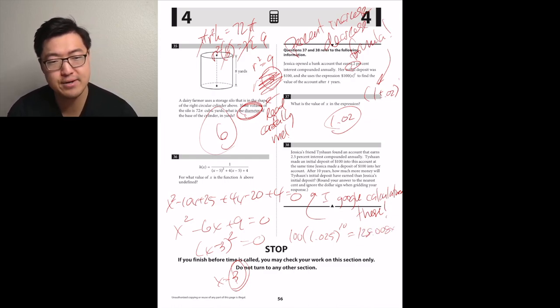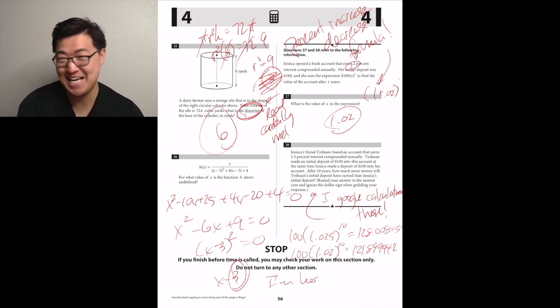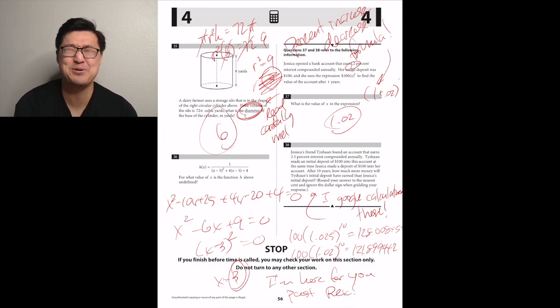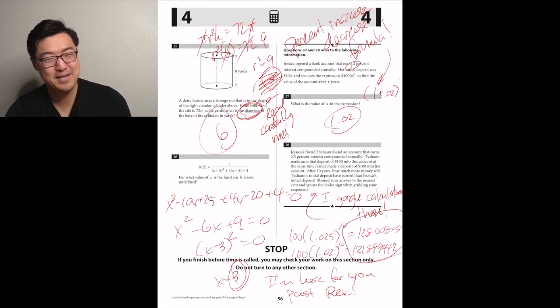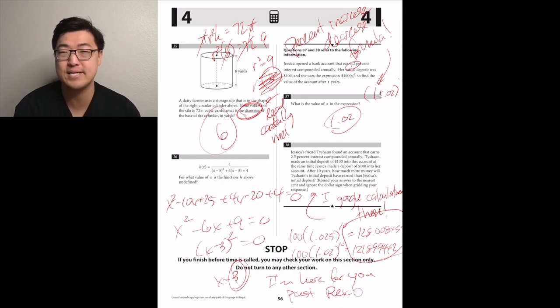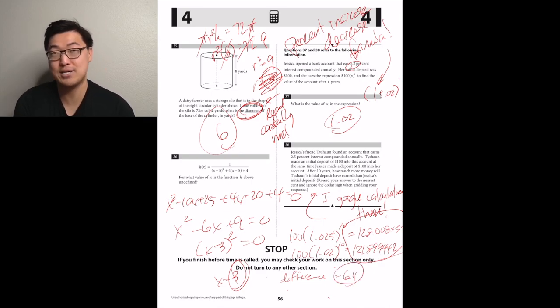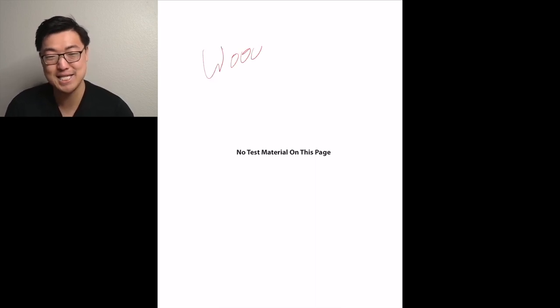Jessica's friend Tyshawn found an account that earns 2.5% interest compounded annually. Tyshawn made an initial deposit of $100 into his account at the same time Jessica made a deposit of $100 into her account. After 10 years, how much more money will Tyshawn's initial deposit have earned than Jessica's initial deposit? I have to concede defeat. There's no way I can do that in my head. To find the amount that Tyshawn's account has after 10 years at an increase of 2.5% interest, you would have to do 100 times 1.025 to the 10th power, which I am absolutely incapable of doing. And then to find Jessica's, you would have to do her original equation. So 100 times 1.02 to the 10th power. Once you use your calculator, unless you have amazing brain power, then you want to subtract those two and then that should be your answer. So I'll find some way of putting it up there in the annotations later on.